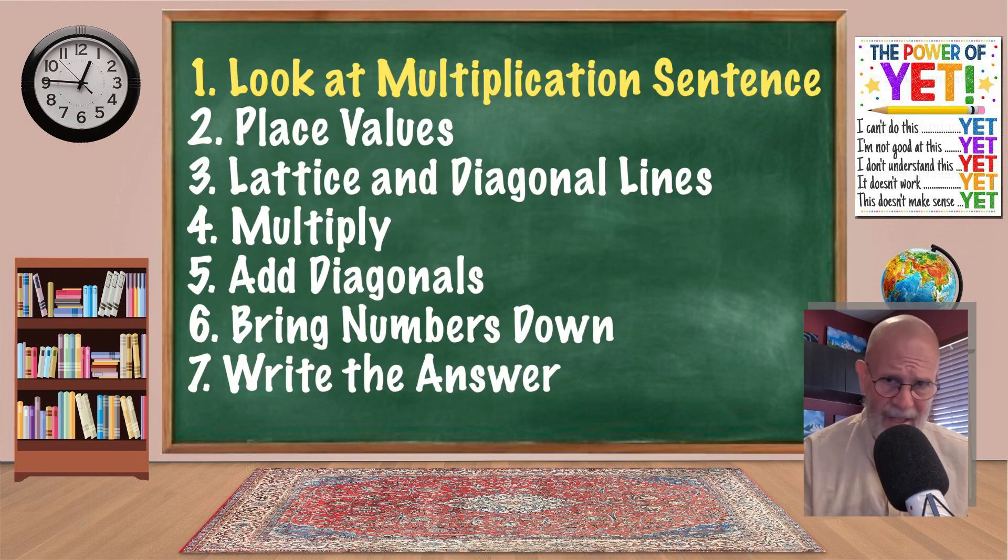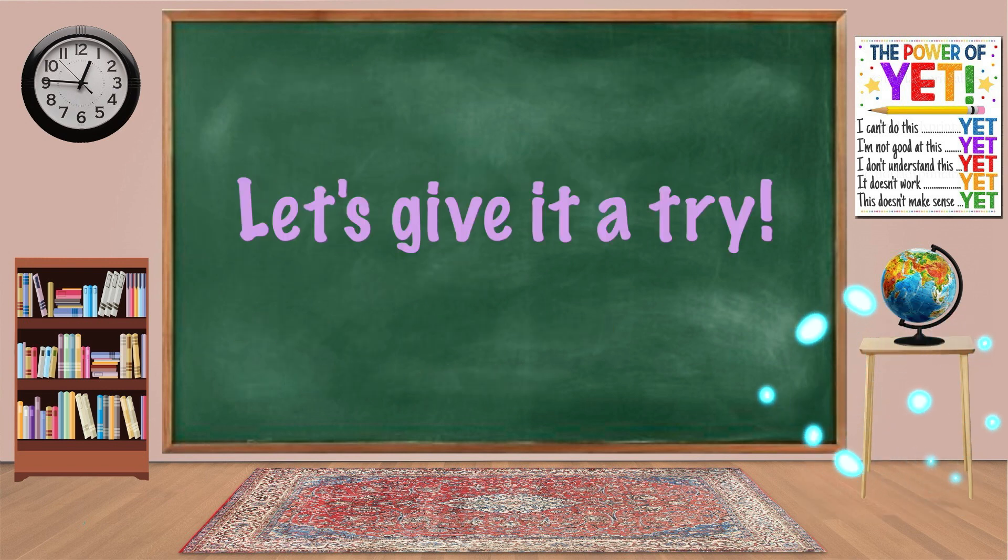One, we'll look at our multiplication sentence. We'll notice the place values of the factors. We'll set up a lattice and draw diagonal lines. Then we multiply. We add our diagonals. Bring our numbers down. And then put the numbers in order up in the answer. Let's give it a try.